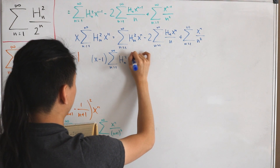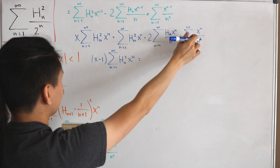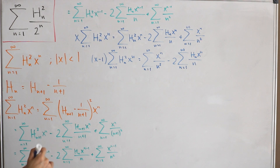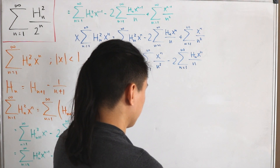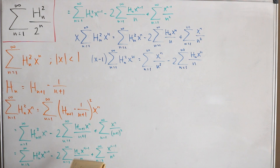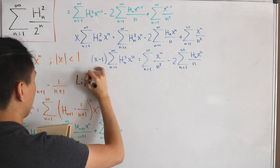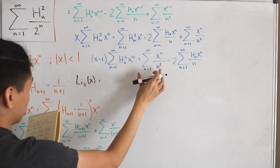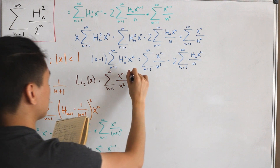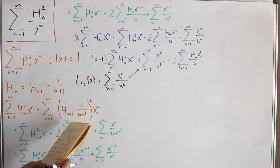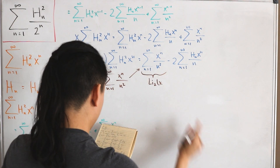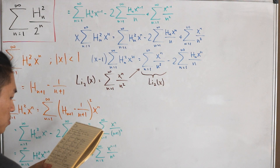Now we apply the dilogarithm definition: Li₂(x) = Σ_{n=1}^∞ xⁿ/n². So we replace the sum Σ xⁿ/n² with Li₂(x). Next we need to evaluate the sum Σ H_n xⁿ/n.